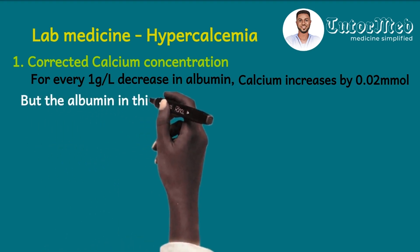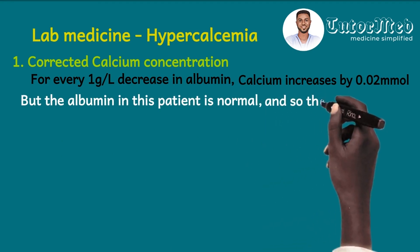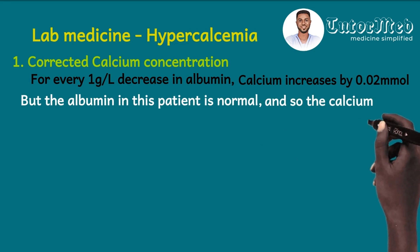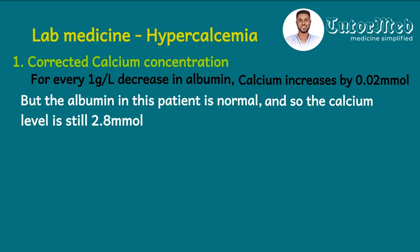The albumin in this patient was 37 g/L, which is within the normal range, so the calcium does not increase by the rule. Therefore, the corrected calcium concentration remains 2.8 mmol/L.